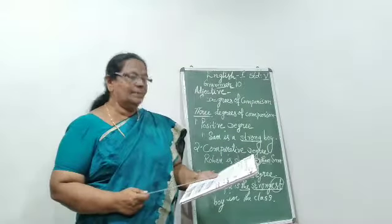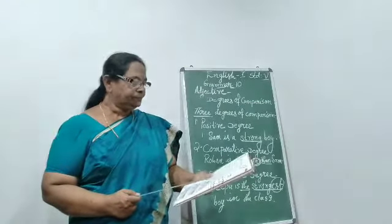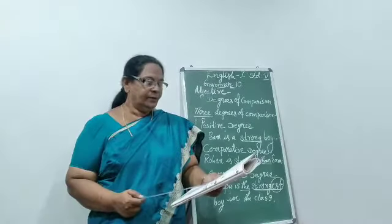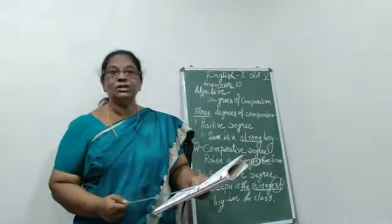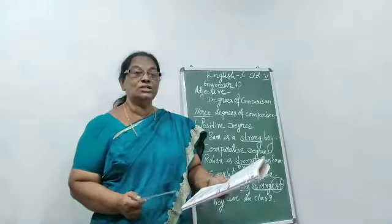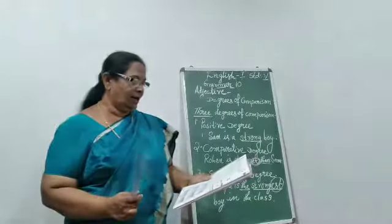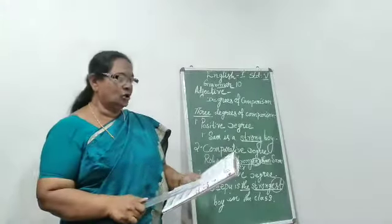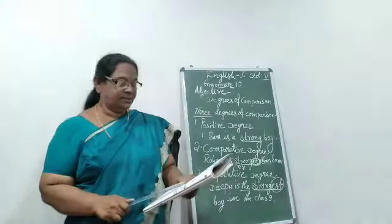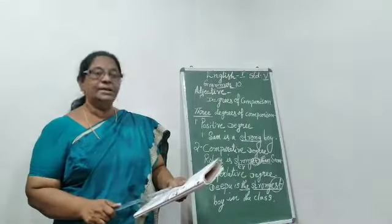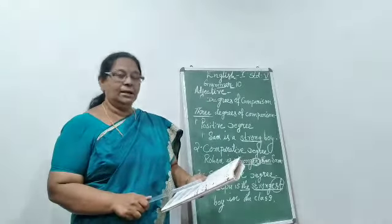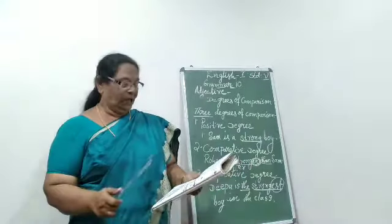Look at the examples given in your book: 'Naaman is the strongest boy in the class' — underline 'the strongest'. 'Mumbai is the biggest Indian city' — underline 'the biggest'. Those are the superlative forms.